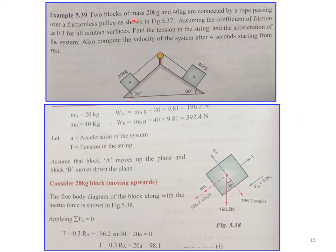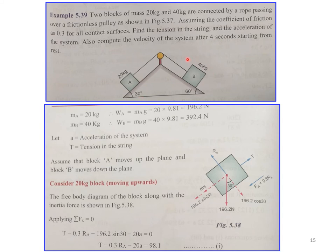Problem 4: Two blocks of mass 20 kg and 40 kg are connected by a rope passing over a frictionless pulley. The coefficient of friction is 0.3 for all contact surfaces. Find the tension in the string and the acceleration of the system. Also compute the velocity after 4 seconds starting from rest. Both blocks rest on inclined planes — block A at 30° and block B at 60°.